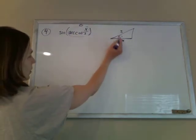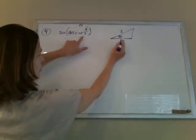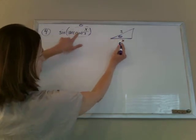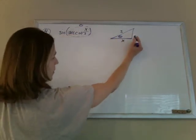And if that's the angle whose cosine is x over 3, and I want the sine of this angle. So we know sine is opposite over hypotenuse.